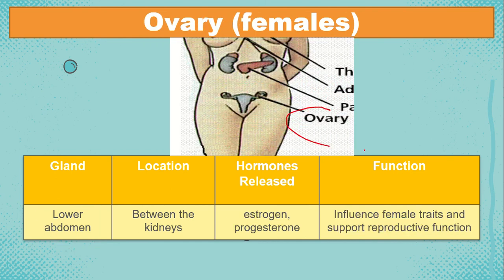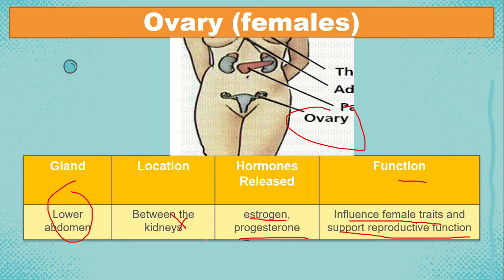The other one, we have the ovary, located along the lower abdomen. It releases hormones estrogen and progesterone. These influence female traits and support reproductive function. Estrogen stimulates female characteristics and maturation of the egg cell. Progesterone stimulates the development of the uterine lining, especially during menstruation, and the formation of the placenta. These two hormones are responsible for female reproductive functions.